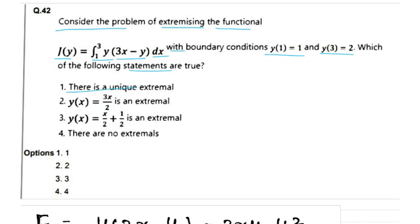First statement says there is a unique extremal. Second statement says y(x) equals 3x/2 is an extremal. Third statement says y(x) equals x/2 plus 1/2 is an extremal. And the last option says there are no extremals. So we need to determine which option is correct. This is a Part C question, so multiple correct options are possible. We need to check all options one by one.